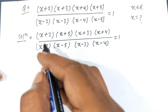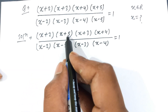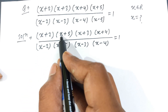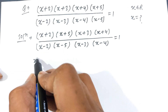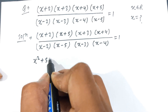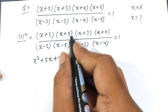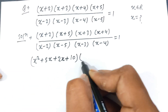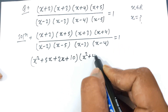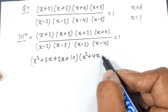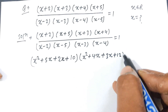Now we expand the numerator. Multiplying (x+2)(x+5): x times x gives x², x times 5 gives 5x, 2 times x gives 2x, and 2 times 5 gives 10. Then (x+3)(x+4): x times x gives x², x times 4 gives 4x, 3 times x gives 3x, and 3 times 4 gives 12.